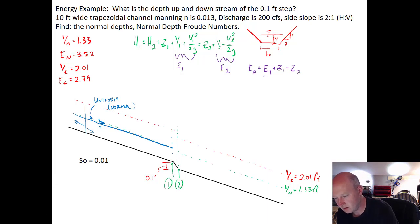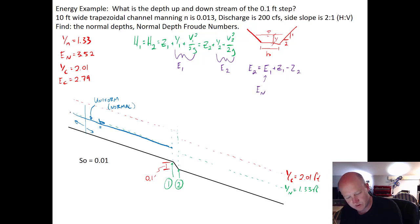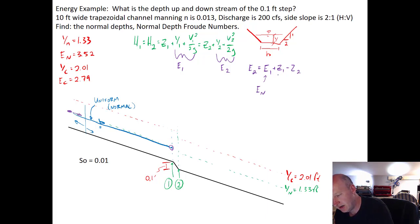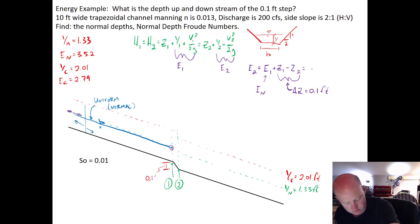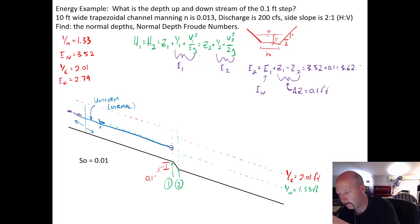The energy at section 2 equals the energy at section 1 plus z1 minus z2. Energy at section 1 is the normal depth energy because we started upstream at normal depth. The step height is ΔZ = 0.1 feet, so: E2 = 3.52 + 0.1 = 3.62 feet.